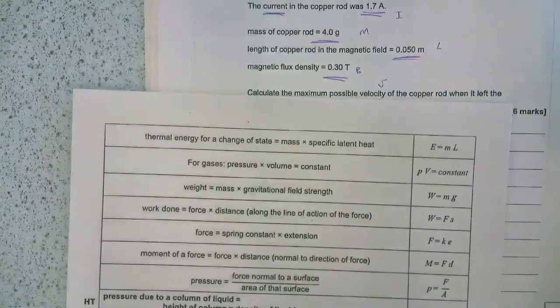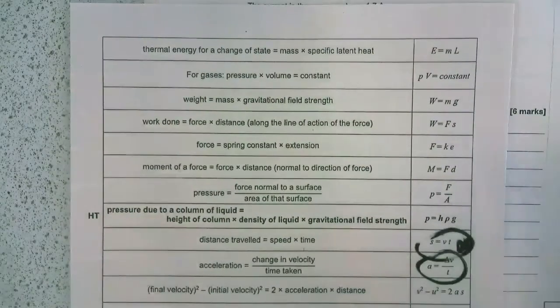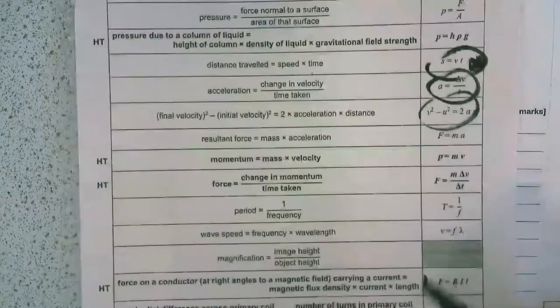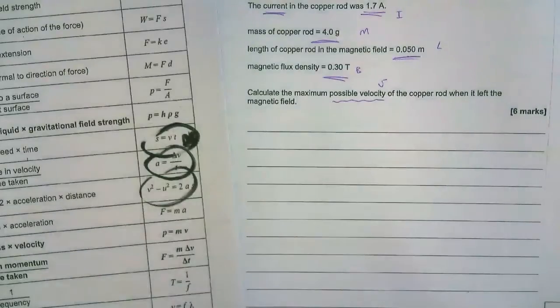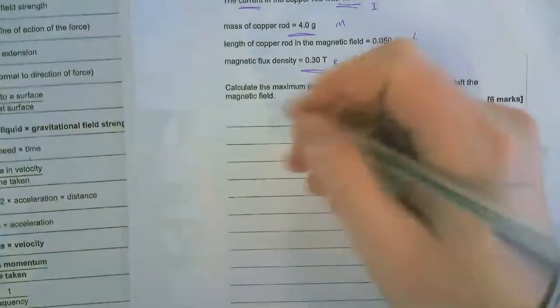So the first one to look at is there's equations of motion. We've got speed, distance, time, we've got acceleration, and there's one that contains magnetic flux density. Now we're going to start off with that one because we know that we can calculate something from that because we have the current, we have the length, and we have the flux density. So let's work out the force.